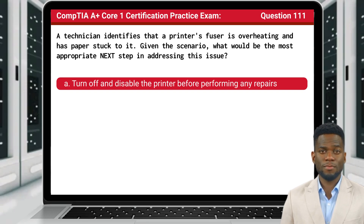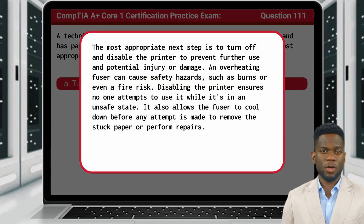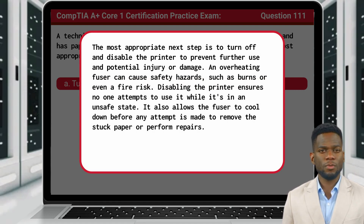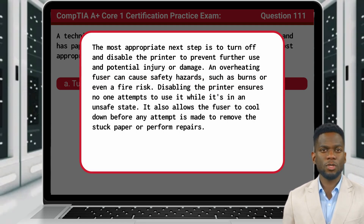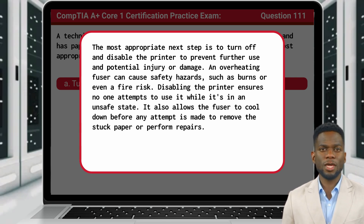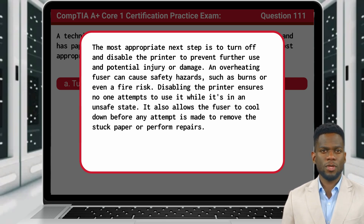The answer is A: turn off and disable the printer before performing any repairs. The most appropriate next step is to turn off and disable the printer to prevent further use and potential injury or damage. An overheating fuser can cause safety hazards such as burns or even a fire risk. Disabling the printer ensures no one attempts to use it while it's in an unsafe state. It also allows the fuser to cool down before any attempt is made to remove the stuck paper or perform repairs.